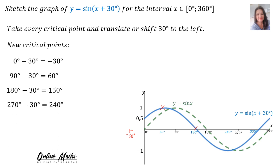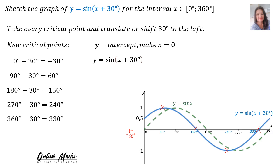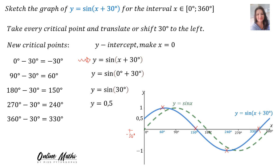The next critical point: 180 minus 30 is equal to 150. That is why my graph cuts at 150 degrees. The next critical point: 270 degrees minus 30 is equal to 240 degrees. And you can see my graph is turning at 240. Then the last critical point on the original was at 360 minus 30 is 330 degrees. You can substitute X = 0 into Y = sin(X + 30) and get Y = sin 30, which is 0.5.